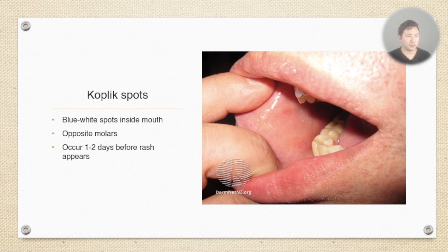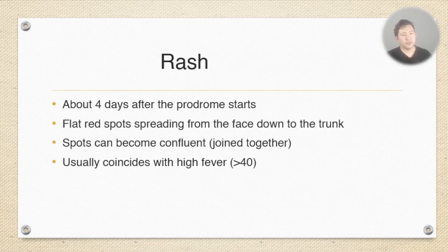The final thing is the rash. About four days usually after the prodrome starts you get these flat red spots that typically start on the face and spread down into the trunk, and sometimes they join up and become what's called confluent. The rash usually coincides with a high fever. They might have had a fever before in the prodrome, but typically when the rash develops there's a high fever of greater than 40 degrees Celsius.